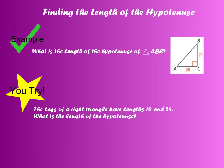So let's look at an example. What is the length of the hypotenuse in triangle ABC? So they give me my two legs. I'm looking for my hypotenuse. So what I'm going to do is say 20 squared plus 21 squared equals C squared, because I don't know my C value, which is my hypotenuse.